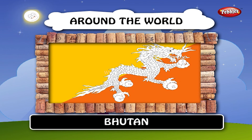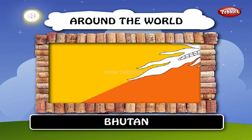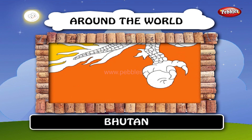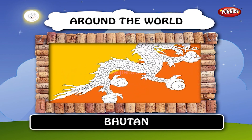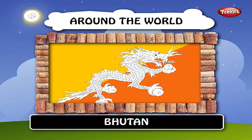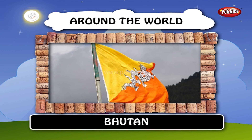Bhutan — the national flag of Bhutan consists of a white dragon over a yellow and orange background. The flag is divided diagonally from the lower hoist-side corner, making two triangles. The upper triangle is yellow, and the lower triangle is orange. The dragon is centered along the dividing line, facing away from the hoist side.